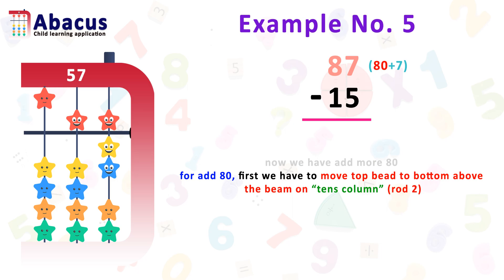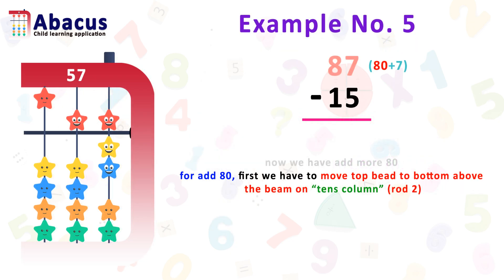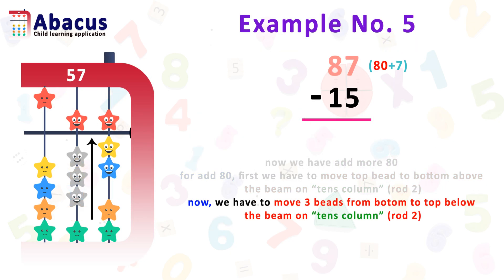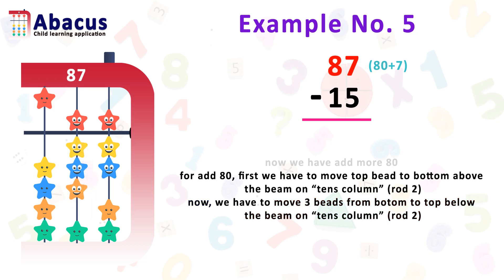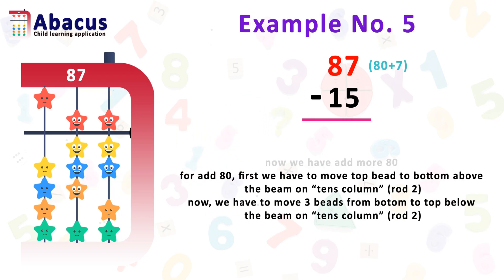For addition on top, always use index fingers to move beads. Now we move 3 beads from the bottom to the top on the same 10th column, which is rod 2 below the beam — use your thumb to move these beads. Always use your thumb on the bottom to move beads for addition. Here we got 87.